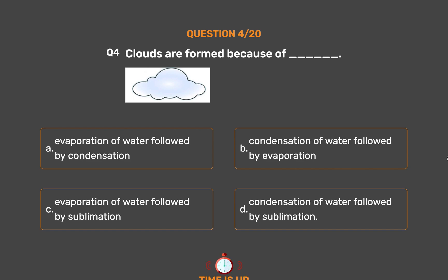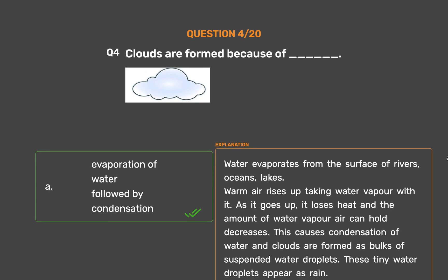The correct answer is Option A: Evaporation of water followed by condensation. Water evaporates from the surface of rivers, oceans, and lakes. Warm air rises up taking water vapor with it. As it goes up, it loses heat and the amount of water vapor the air can hold decreases. This causes condensation of water and clouds are formed as bulks of suspended water droplets.